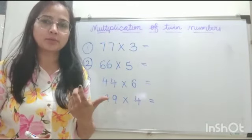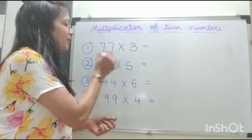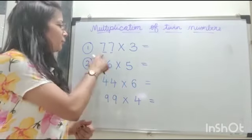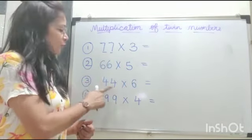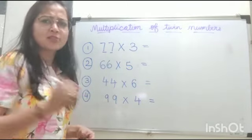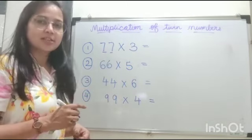Twin numbers means similar numbers, numbers which are like 7 and 7. They are the same kind, both are the same: 6 and 6, 4 and 4, 9 and 9. Now there is a very simple trick to calculate such numbers.